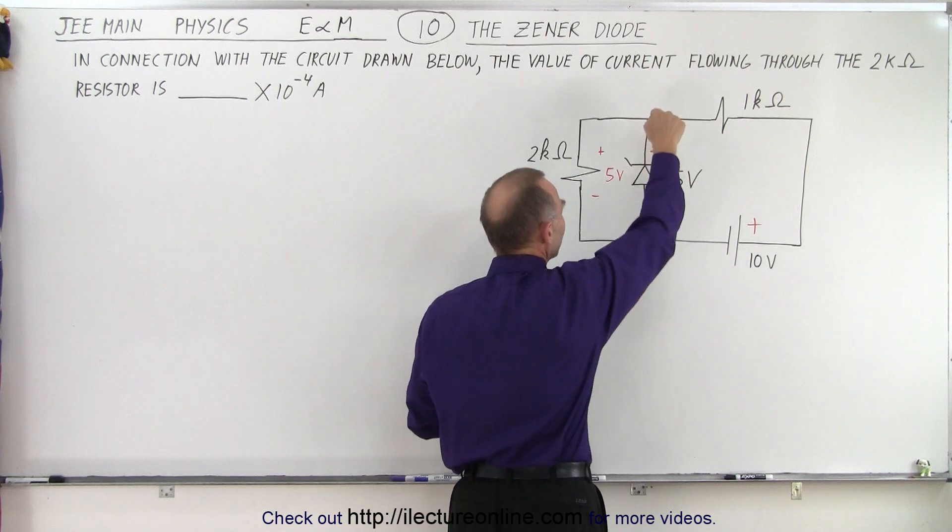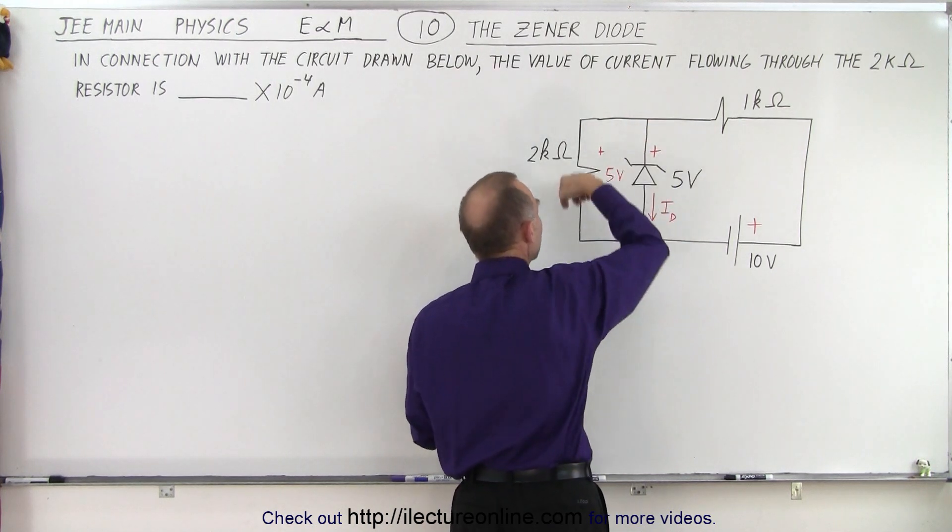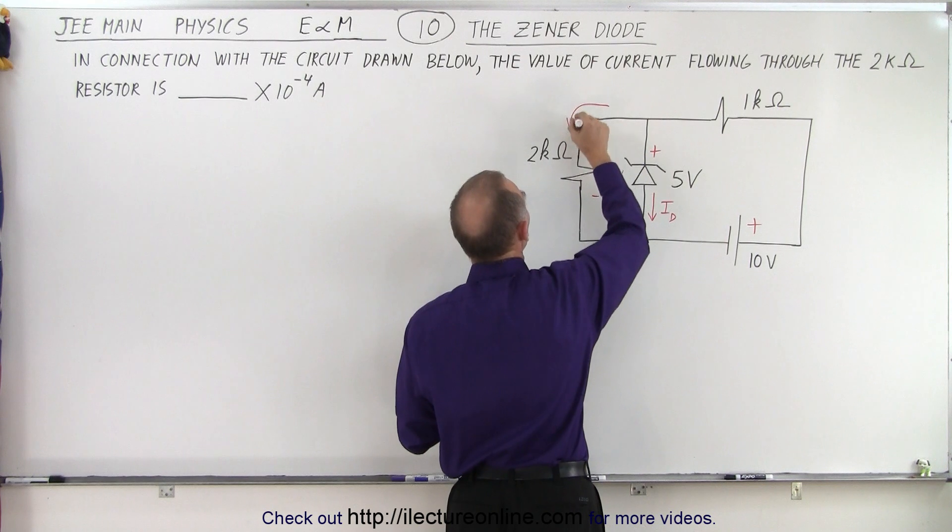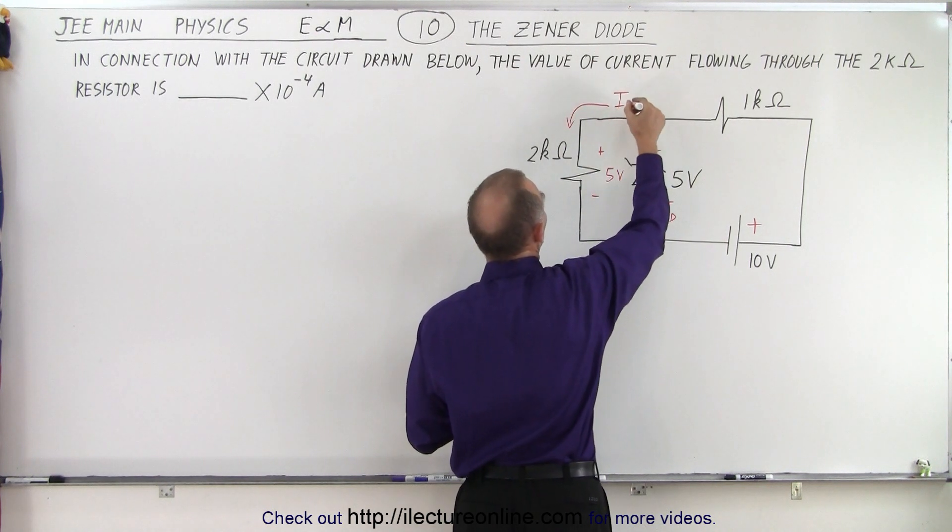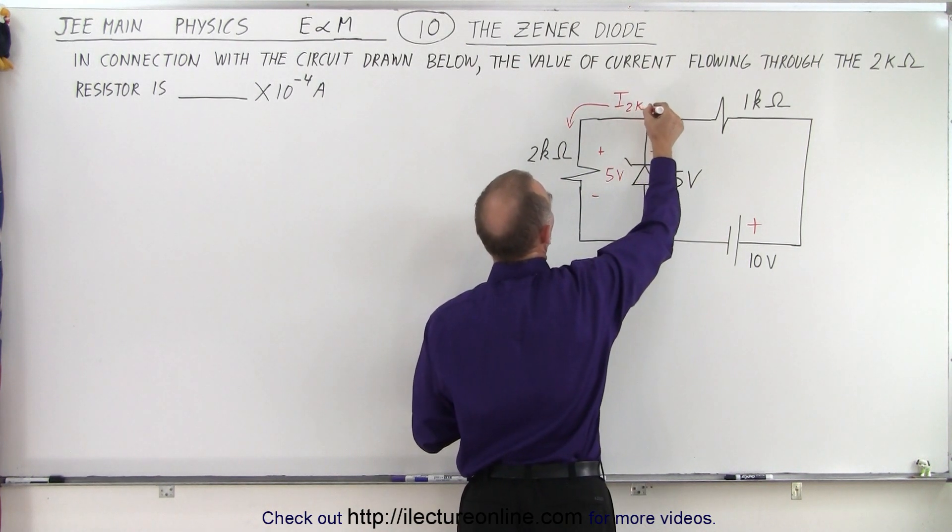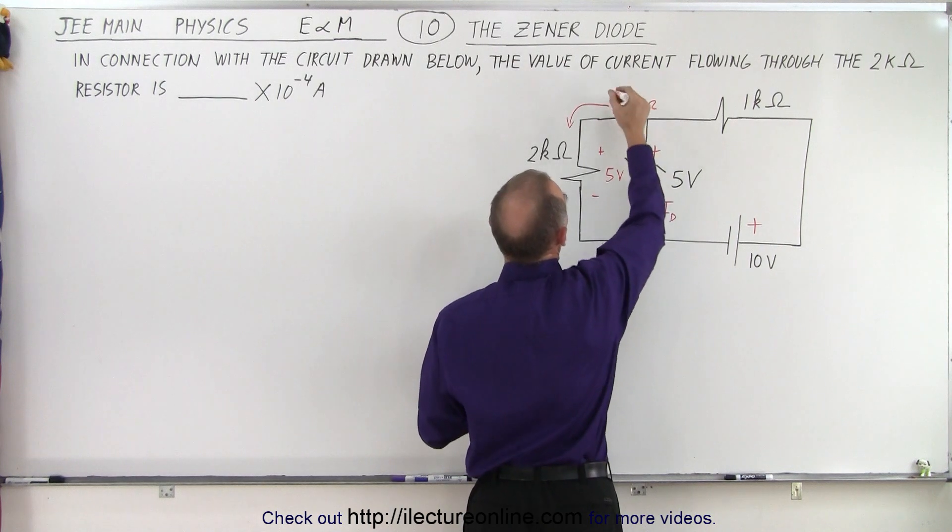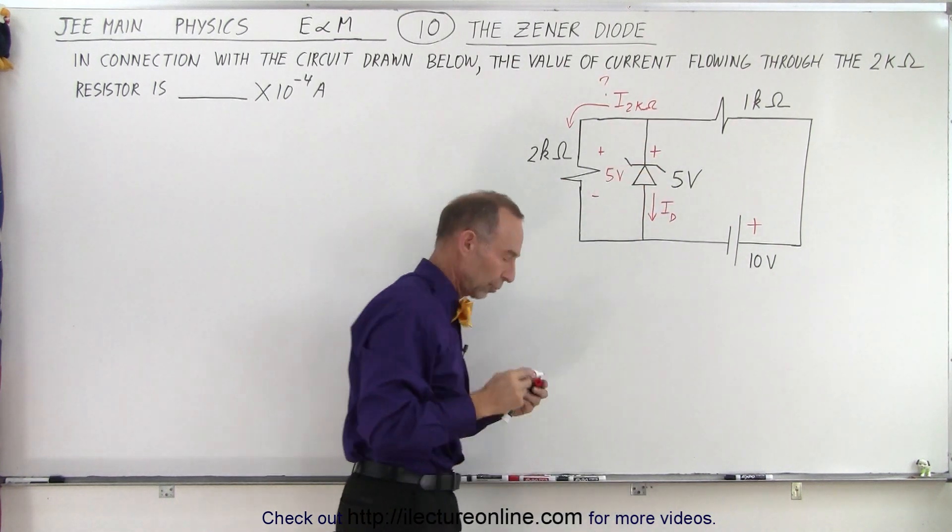The remainder of the current will flow through this resistor right here—that's I through the 2 kilohm resistor. That is what we're looking for; we're trying to find the current through that resistor.